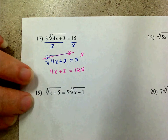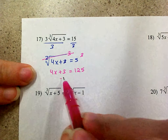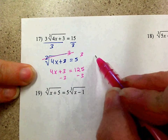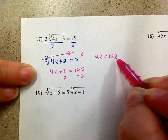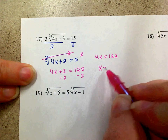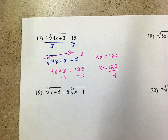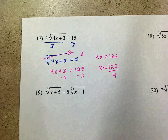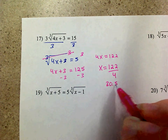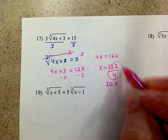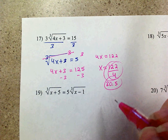So then I'm going to solve for x — subtract 3 and say 4x equals 122, and then divide by 4. So x equals 122 divided by 4, which doesn't simplify exactly. It's 30.5, but either answer is acceptable: 122 fourths or 30.5.